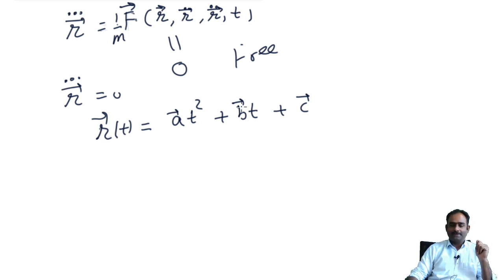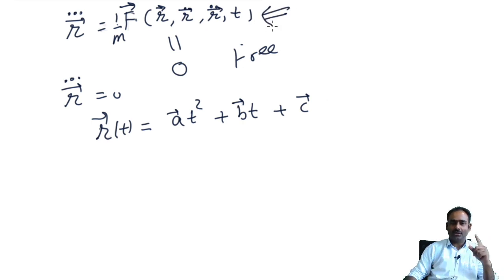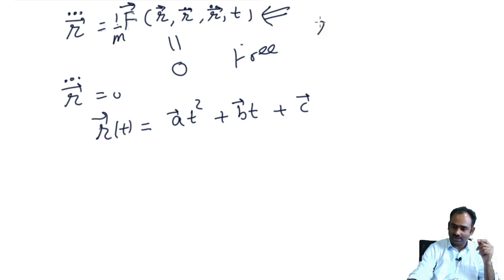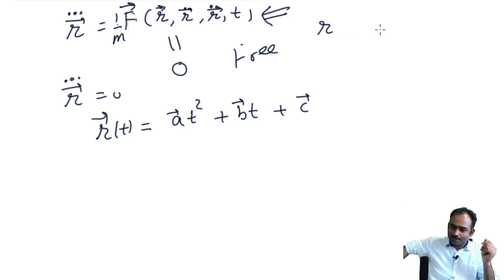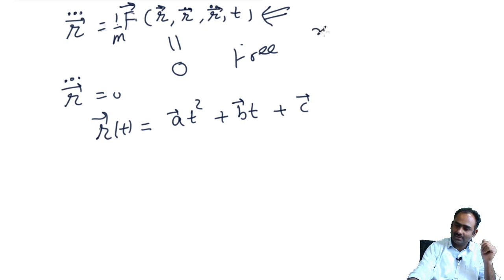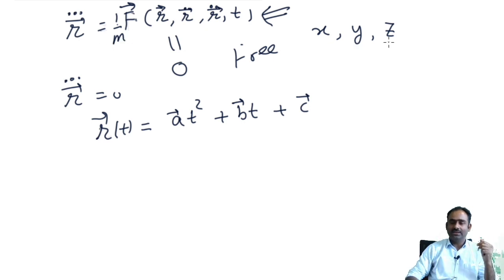Remember, the vector equation is really three equations — one for each Cartesian component x, y, and z. So x-triple-dot equals (1/M)Fx, y-triple-dot equals (1/M)Fy, and so on. Each vector equation becomes three scalar equations. So solving it, you get a result after integrating involving three vector constants A, B, and C.